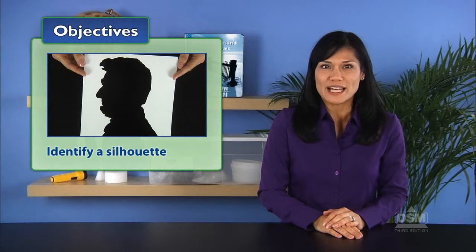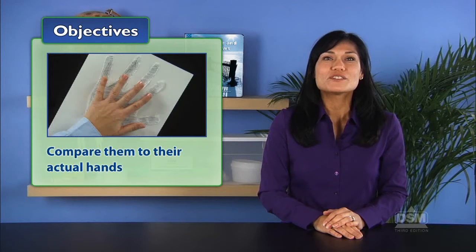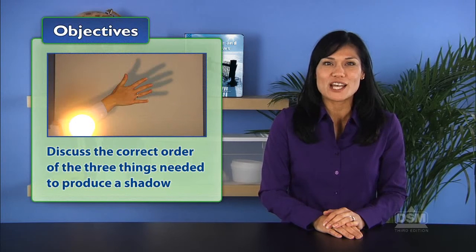They first identify a silhouette, then make silhouettes of their hands, and then compare them to their actual hands. Finally, students discuss the correct order of the three things needed to produce a shadow.